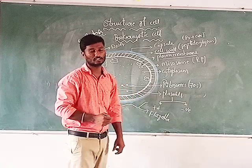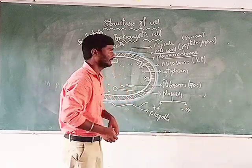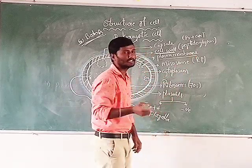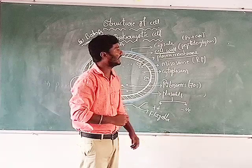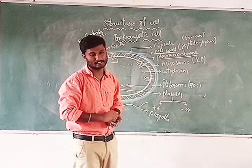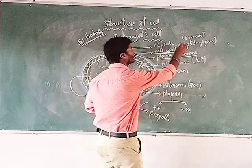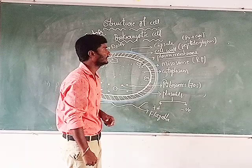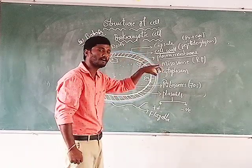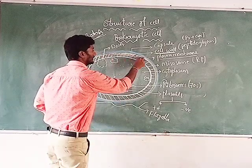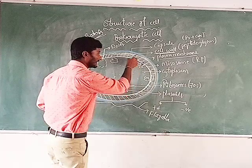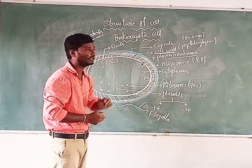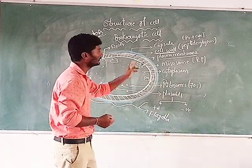Peptidoglycan substance is made up of two components: peptido, which is a protein component, and glycan, which is a carbohydrate component. So the cell wall is made up of proteins and carbohydrates — it looks like a thick layer. What is the function of the cell wall? It protects cell organelles from unfavorable conditions or external environment. That is the main function of the cell wall.